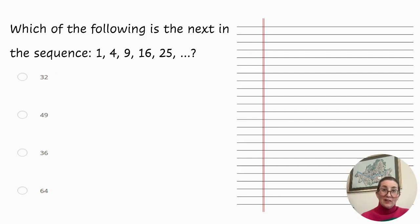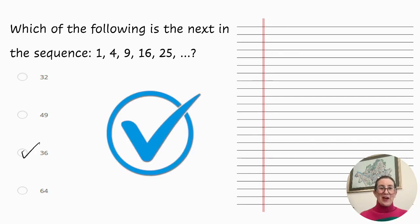The first question, which of the following is the next number in the sequence 1, 4, 9, 16, 25, and so on? This list should be recognizable as a specific series of numbers: 1 squared, 2 squared, 3 squared, 4 squared, 5 squared. As such, the next number in this sequence will be 6 squared, which is 36. And there you have it.